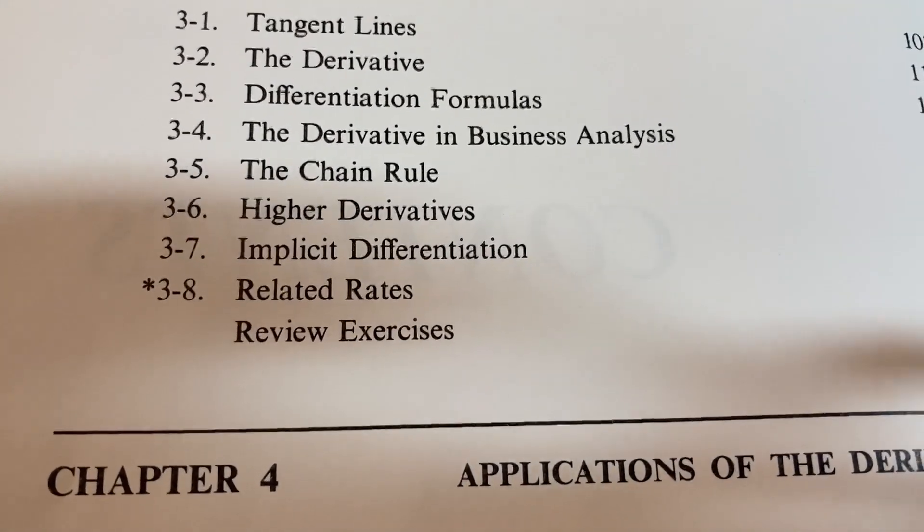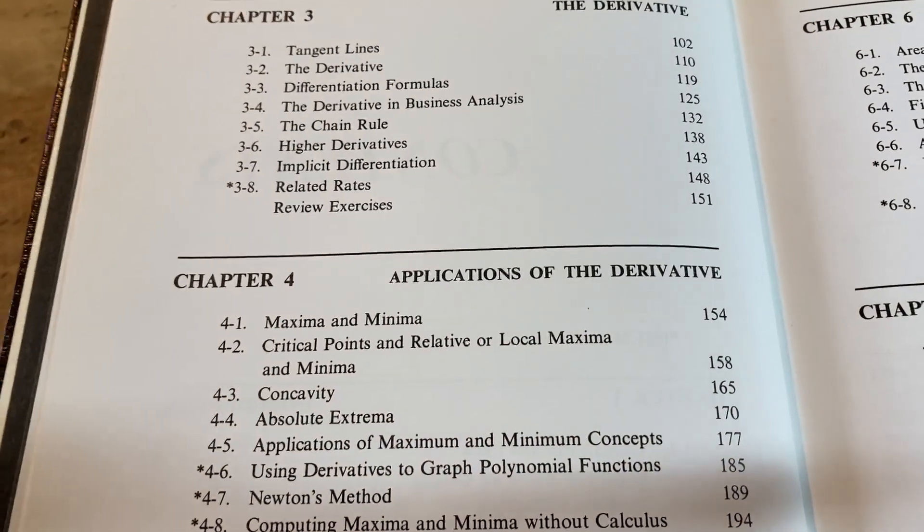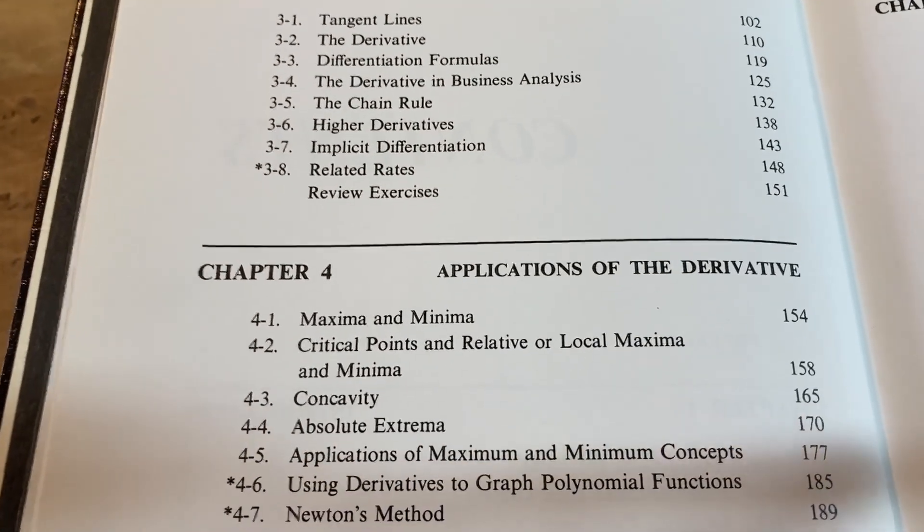Notice the asterisk next to related rates. That's something you definitely cover in a calc one course but the author is treating it as an optional topic in this book.